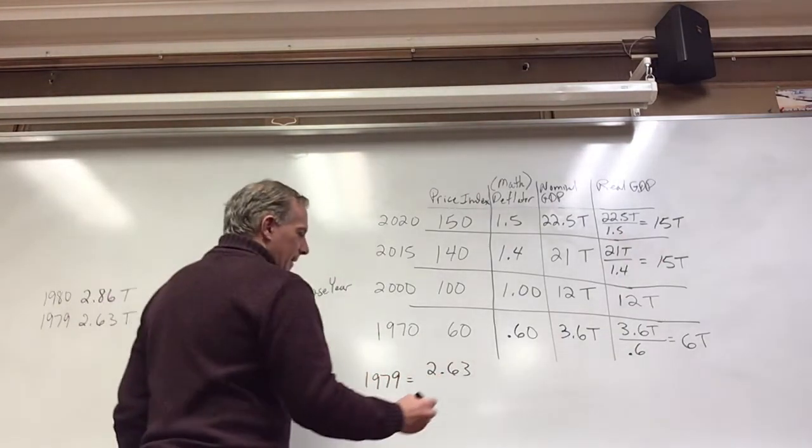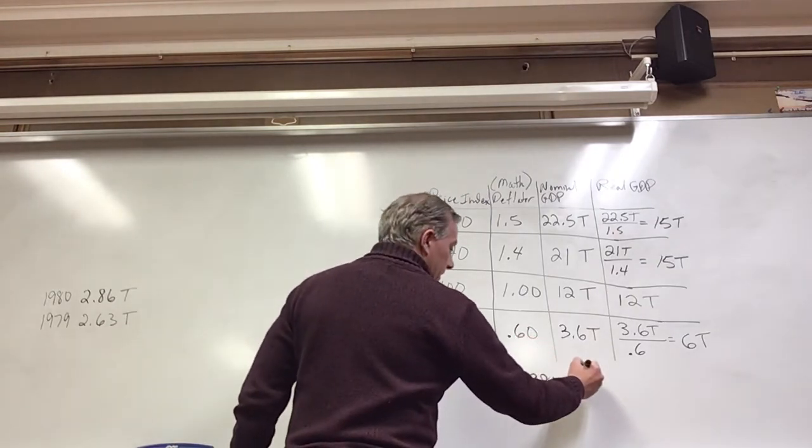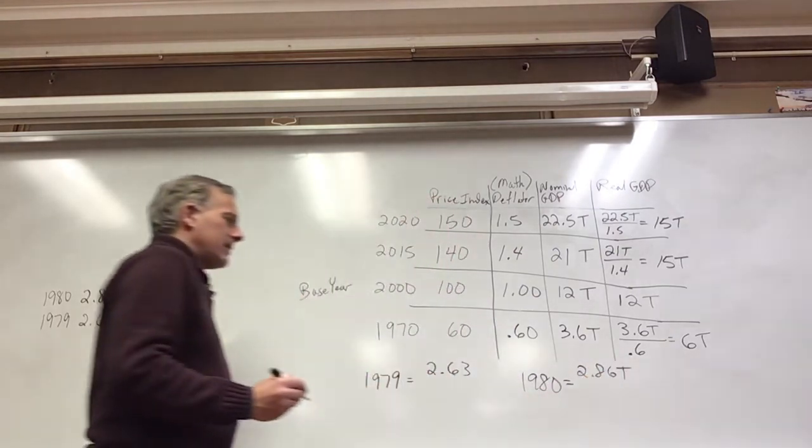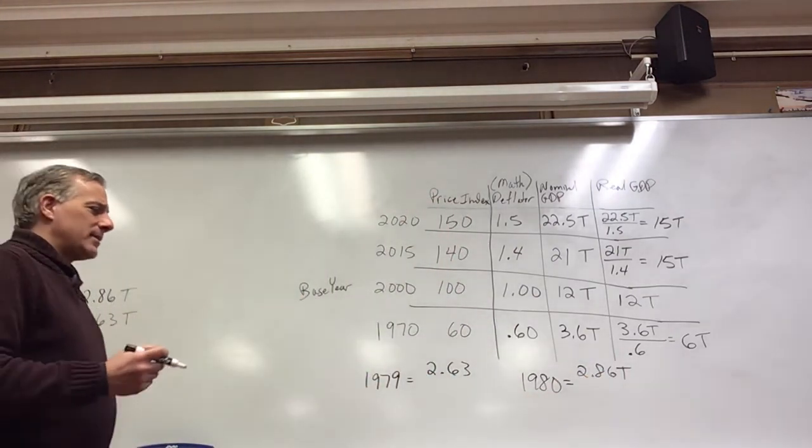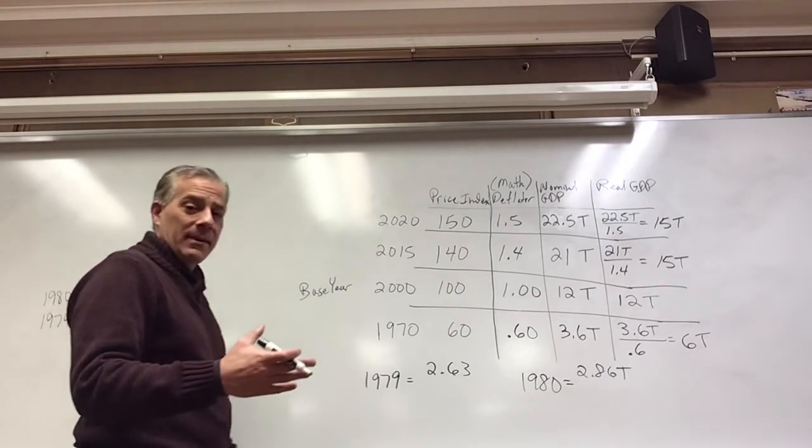And 1980, the nominal GDP was 2.86 trillion. Well, inflation was about 10% between 1979, 1980, maybe even a little bit higher.